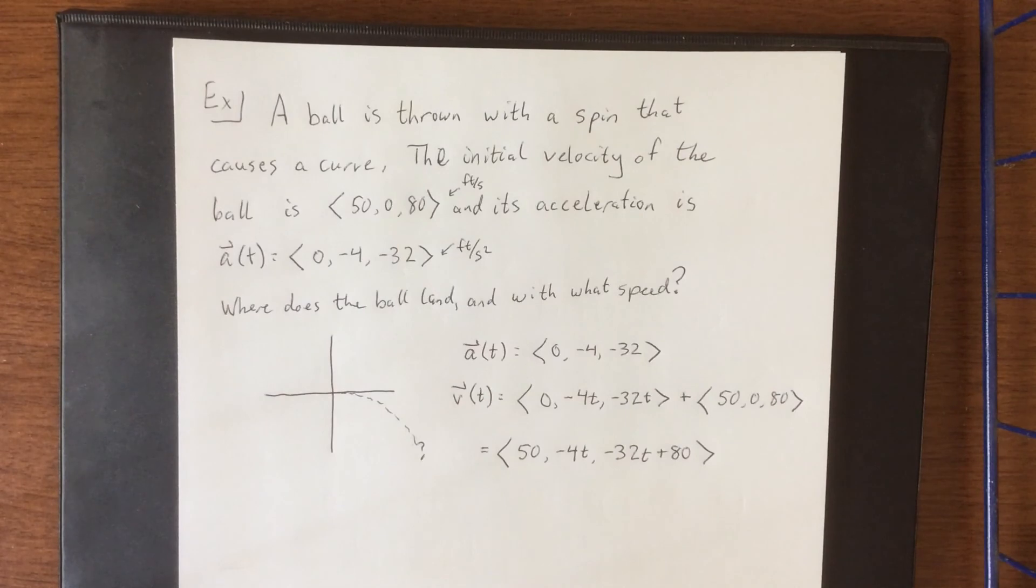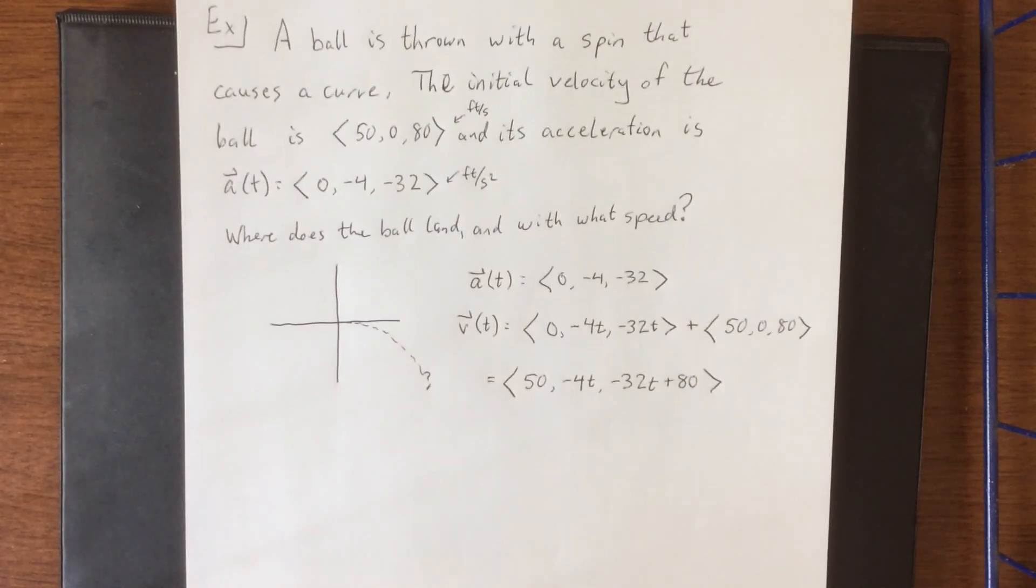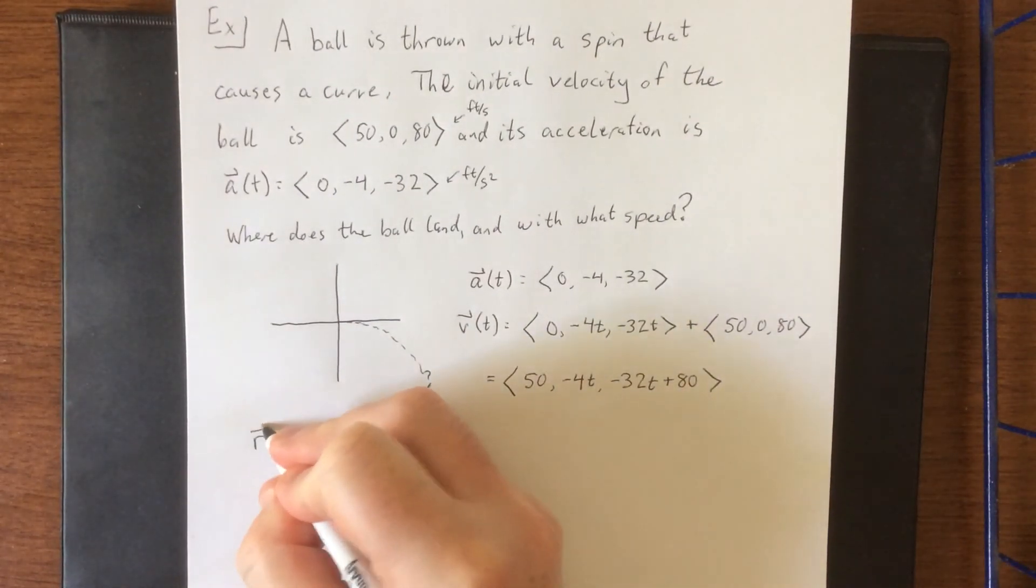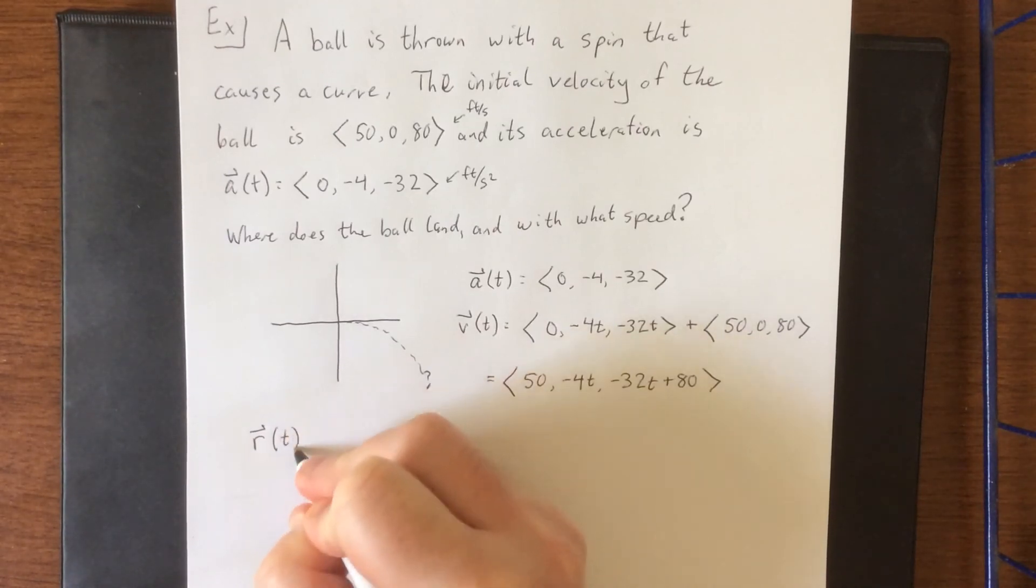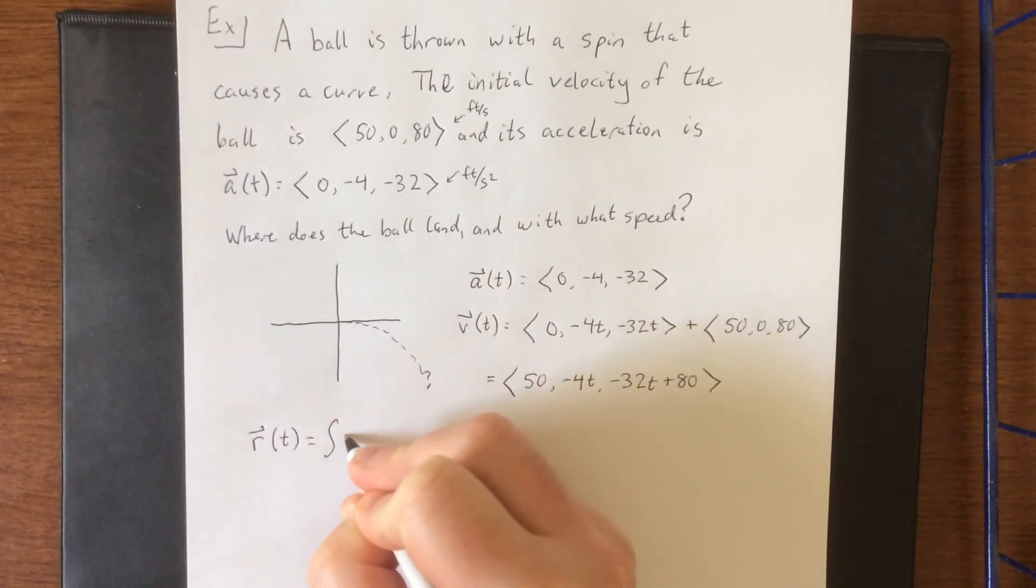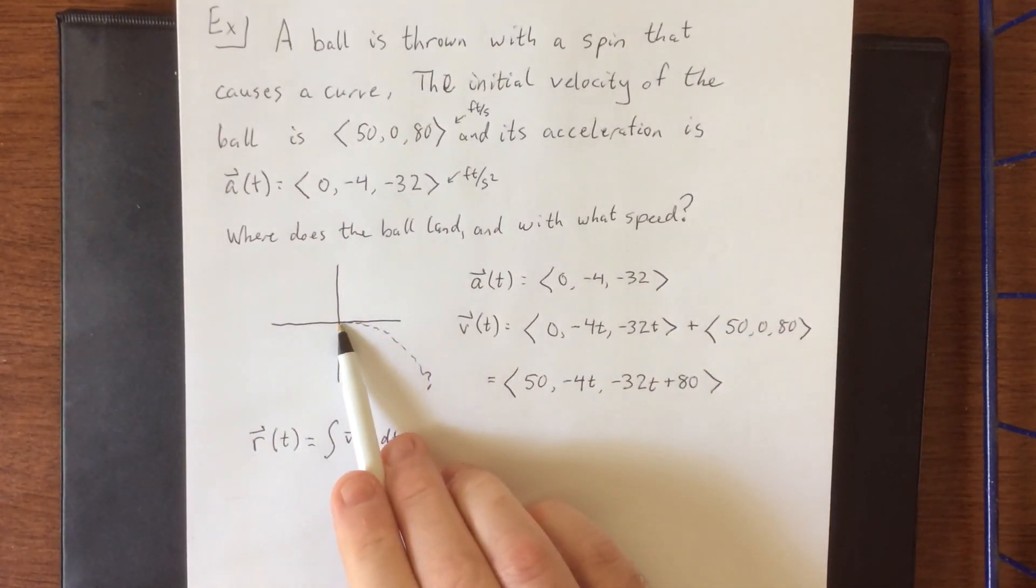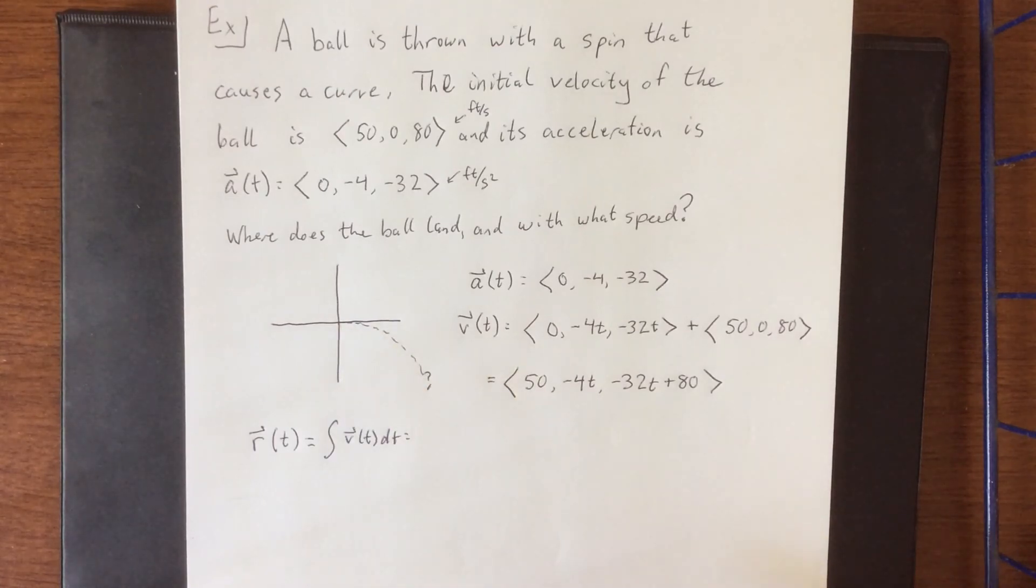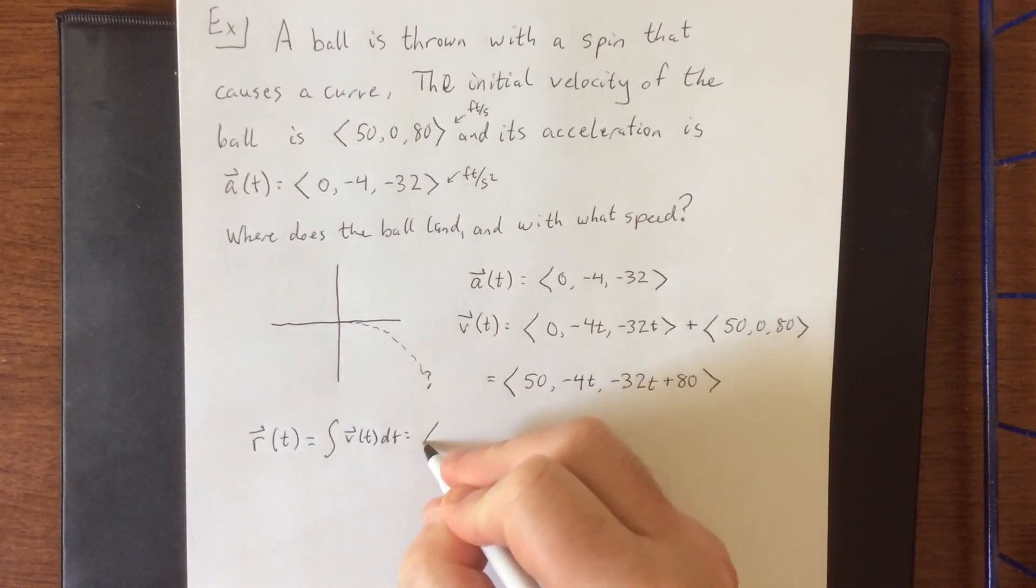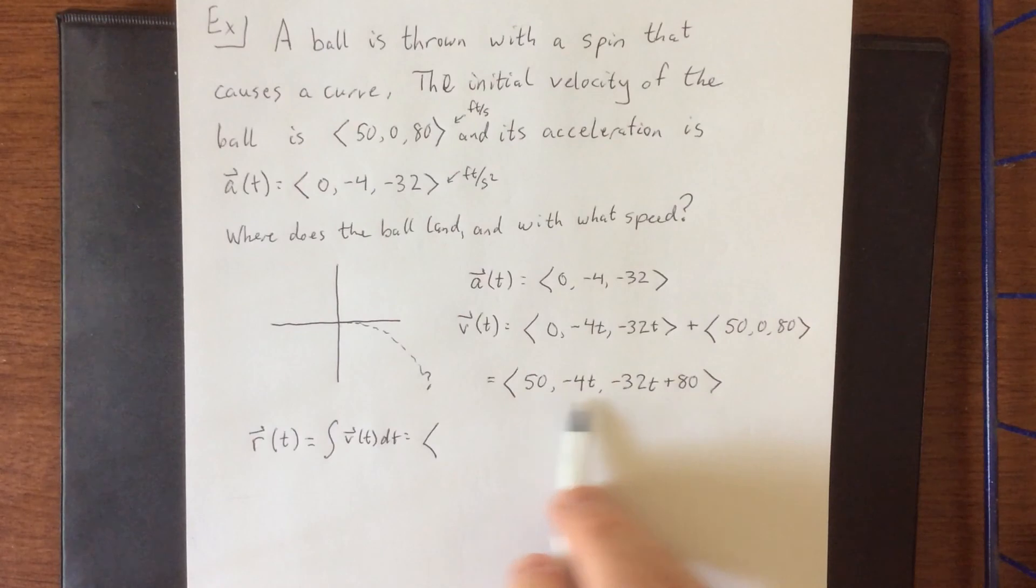So if we perform one more antiderivative with this, we will be able to come up with our position function. We'll call that r(t), and that'll be the integral of our velocity function with respect to t. Given that we'll just define our initial position as being the origin, there doesn't need to be any initial condition thrown on this, and we could just integrate each of these directly.